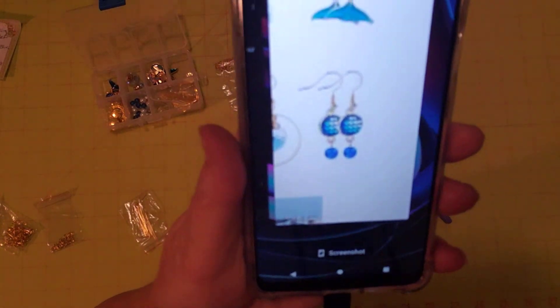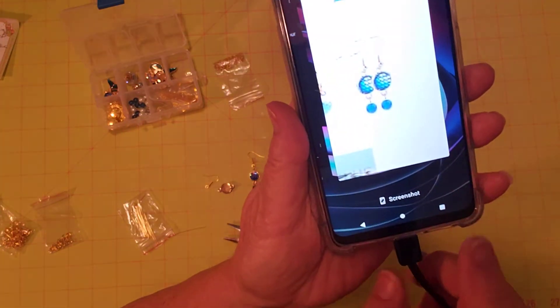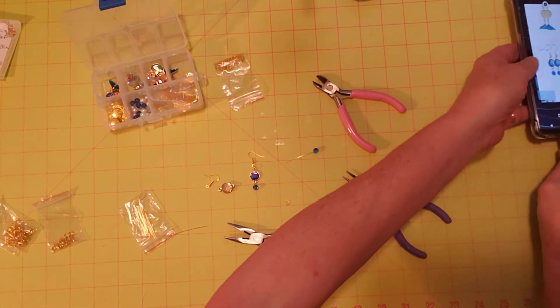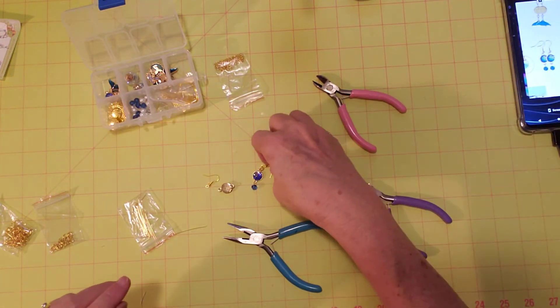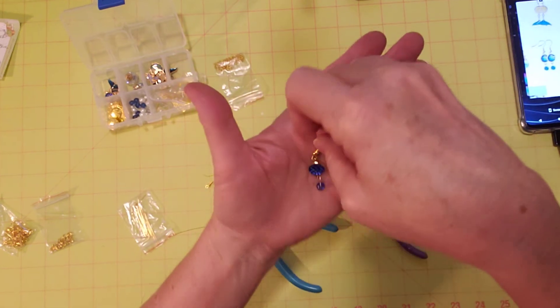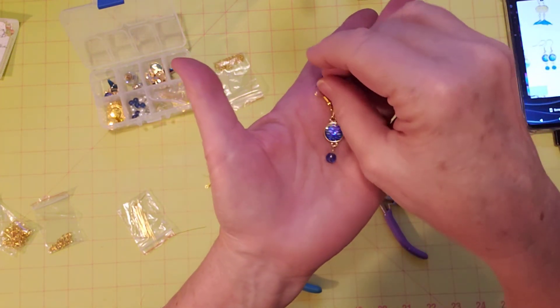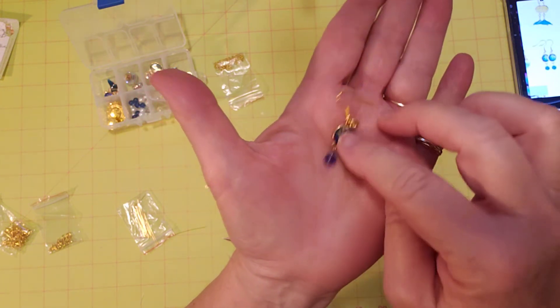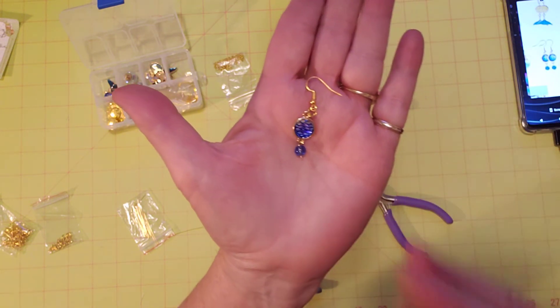So I looked it up on my phone here real quick so I could have it handy, and these are the earrings I'm making right here so you can see what I'm going for there. So I made one already and we're going to make the second one together. Earrings are pretty easy to make.